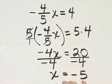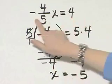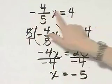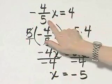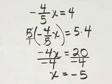Now, by the way, this is simply one way to solve. You could have multiplied both sides of your equation by the reciprocal of negative 4 fifths, which is negative 5 fourths. That would have worked also, but I'm just going to stick with the steps that I gave you.